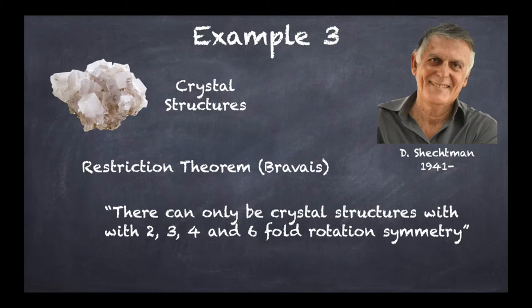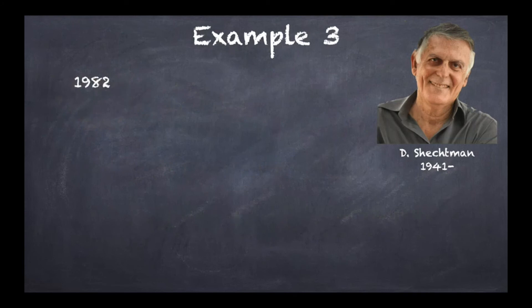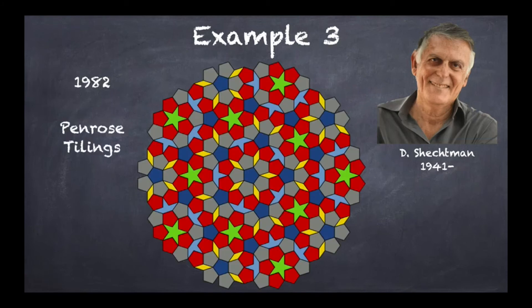So in three dimensions, you can't have any other rotation symmetry for these kind of structures than 2, 3, 4, and 6. Now this was the actual orthodoxy when Shechtman in 1982 was studying some specific metal alloys. And when he actually looked at them, the kind of structure he got from his experimental data was something that was reminiscent of what were called Penrose tilings.